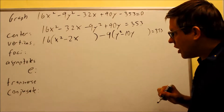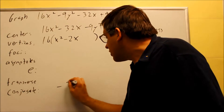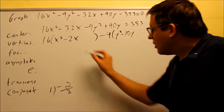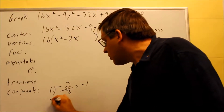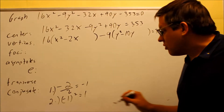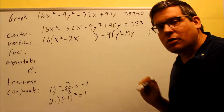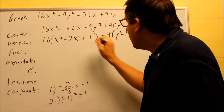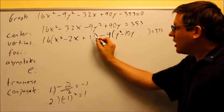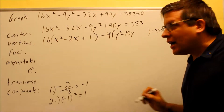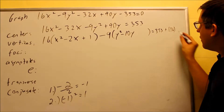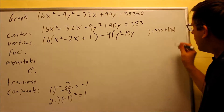Now we're ready to complete the square. Take the number in front of the non-squared variable — that's negative 2 — divide by 2 to get negative 1 (step 1). Then square that: negative 1 squared equals positive 1 (step 2). We add that 1 inside the parenthesis. When we bring it over to the right side, we must multiply by the number on the outside — so 1 times 16 gets added to the right.